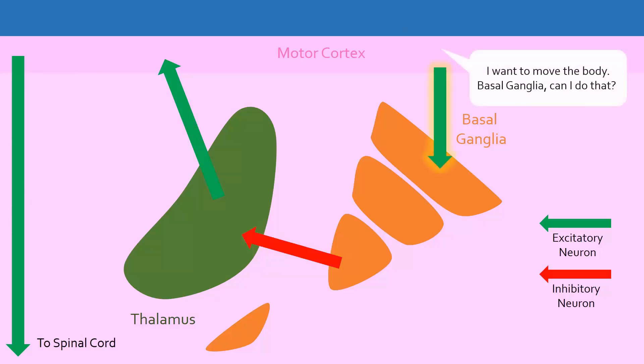Conversely, if these inhibitory neurons are inactivated, then nothing is stopping the neurons connecting the thalamus and motor cortex from being excited, so they activate the motor cortex. The motor cortex then sends signals down the spine to cause certain parts of the body to move.